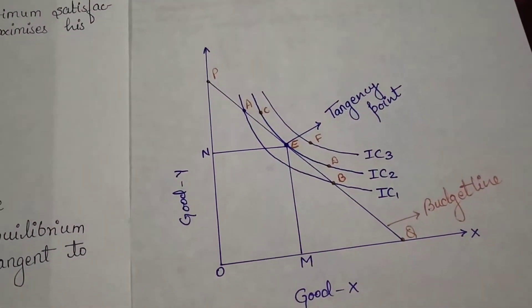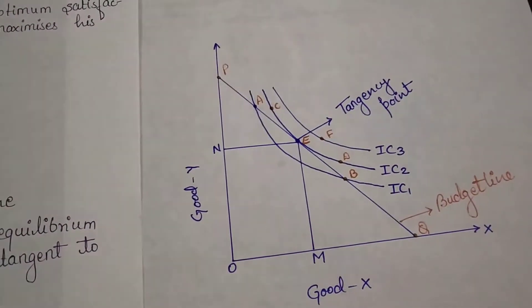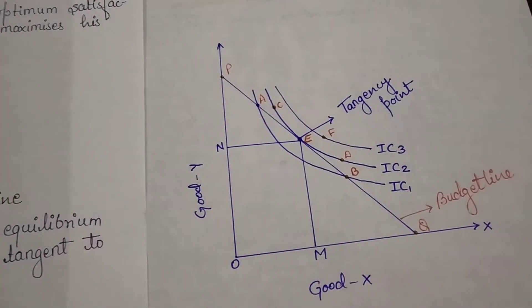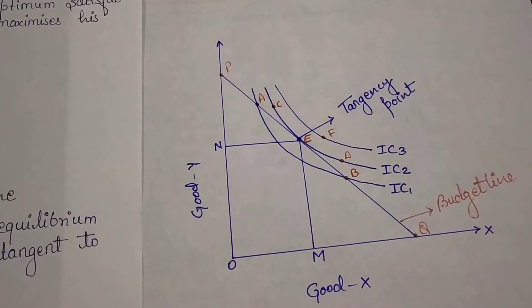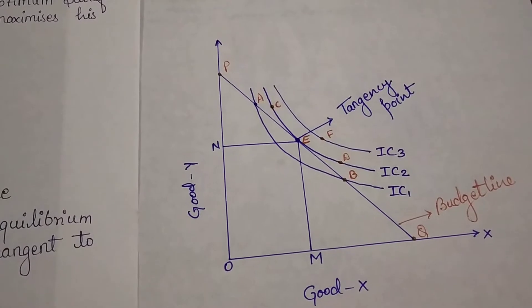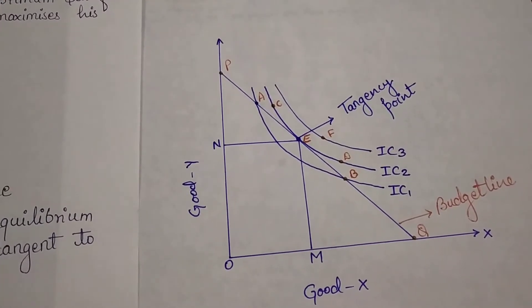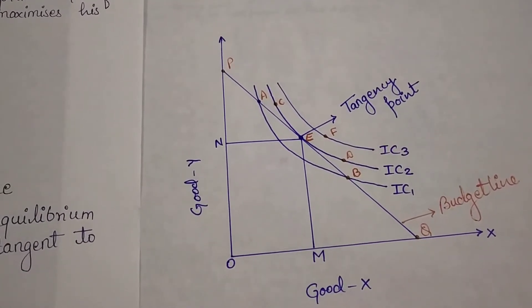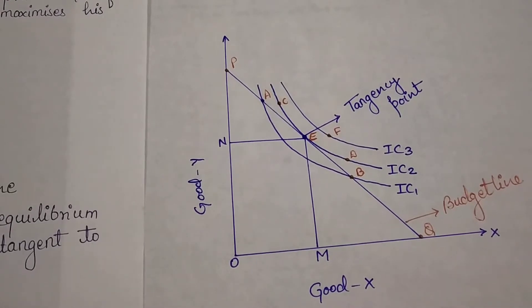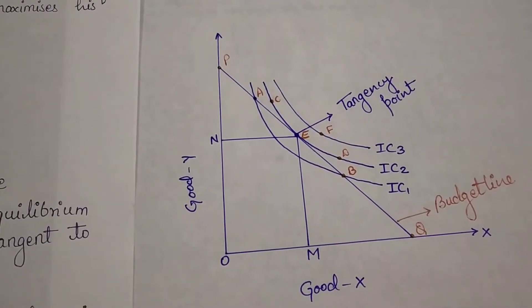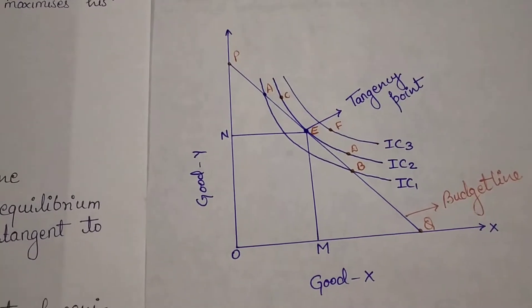Same as in case of D. But if we will talk about point E, at point E both conditions are satisfied. So this is the point of equilibrium.